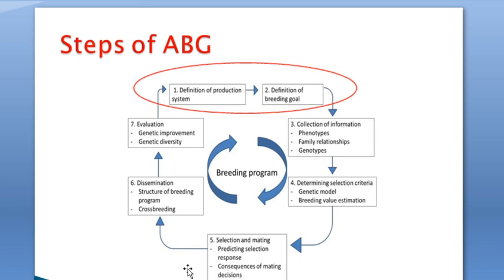Now let's go through the main steps of animal breeding and genetics. First of all, it is important to define the production system and the goals. Once the production system is well defined, breeding goals are to be specified. This is followed by the collection of information about the phenotype, family relationships, and genotype.